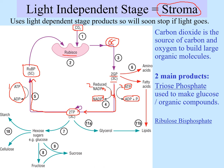The products that the Calvin cycle makes are everything that makes biomass in living things. GP can be converted directly into amino acids, which can be turned into proteins. GP can also be turned into fatty acids. Triose phosphate can be turned into hexose sugars, and plants can turn those into starch, cellulose, fructose, or sucrose as needed. Triose phosphate can also be turned into glycerol. Glycerol plus three fatty acid chains gives a lipid, or with a phosphate group, a phospholipid.